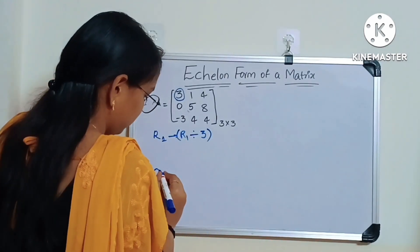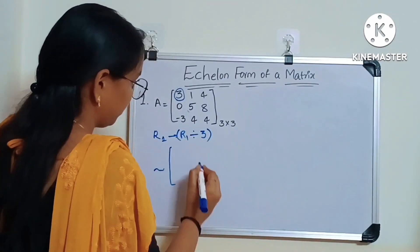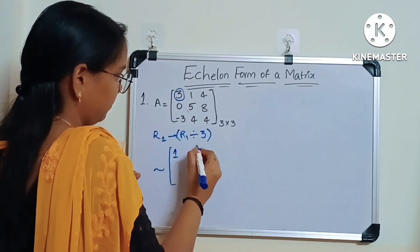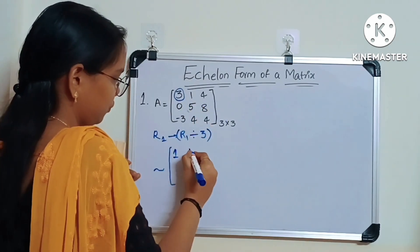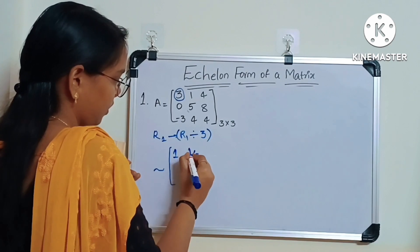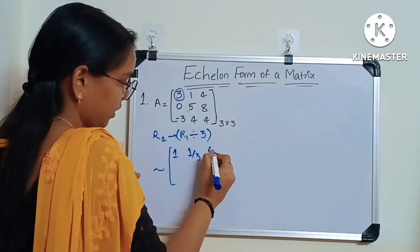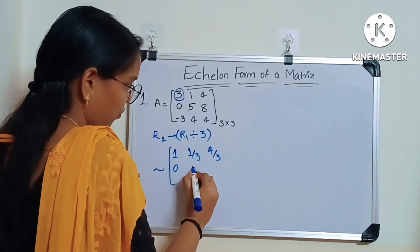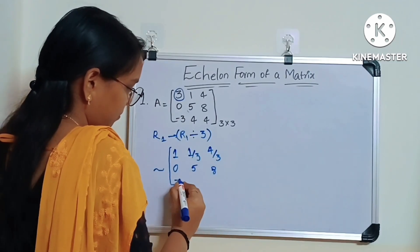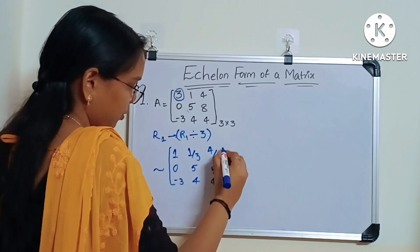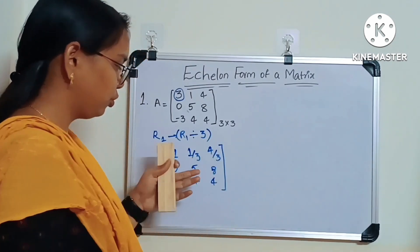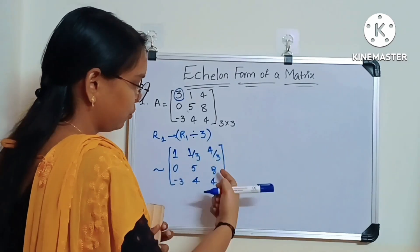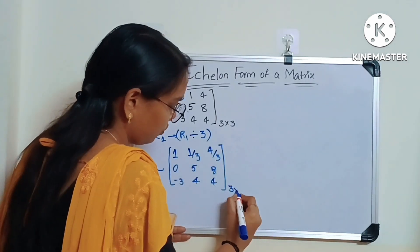If you see here, R1 divided by 3 gives us: 3 by 3 is 1, 1 by 3, and 4 by 3. We are not changing R2 — keeping it as 0, 5, minus 3, 4, 4. We are only changing R1, which is why R2 remains the same.